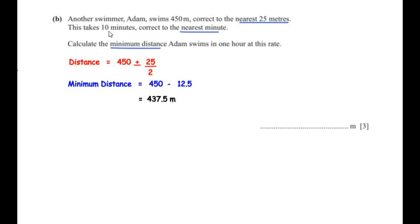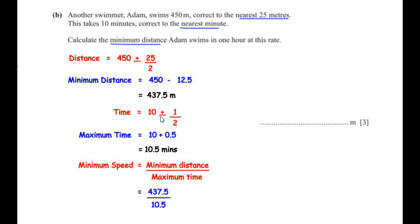For the time, since it is correct to the nearest minute, the upper bound is 10 plus 0.5 giving a maximum time of 10.5 minutes. To find the minimum distance we need the minimum speed, and minimum speed equals minimum distance over maximum time. This is because using the smallest distance and the largest time gives the lowest possible rate.